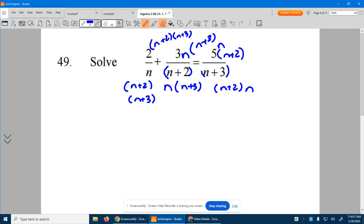At this point, your denominators are all the same. It's an n times an n plus 2 times an n plus 3. So we can just set the numerators equal to one another. Now, I'm just going to erase this, give myself more room.